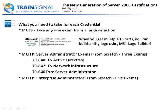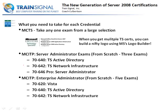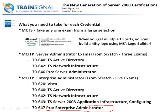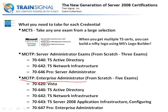For the MCITP Enterprise Administrator, there are two additional exams, so you're going to have to take five exams total. First, you're going to need a Vista exam. You'll need to take the 7640 and 7642 — the same as for the MCITP Server Administrator — then you'll need to take 643, which is Application Infrastructure Configuring, the video series we're watching now. Then you need to take the 7647 pro-level exam for Enterprise Administrator. The biggest differences between the two tracks are the Vista Configuration exam and the Application Infrastructure Configuration exam. You could grab your Server Administrator and then take two more exams to end up with an MCITP Enterprise Administrator.